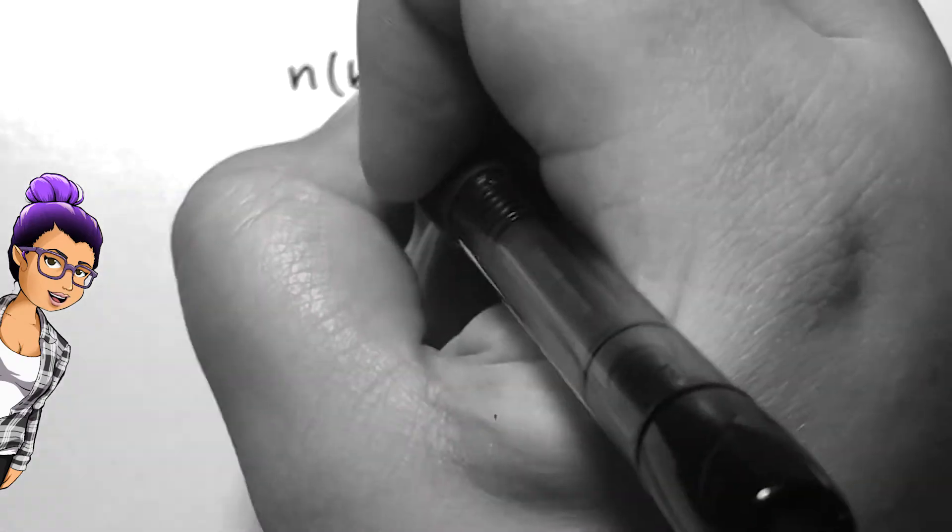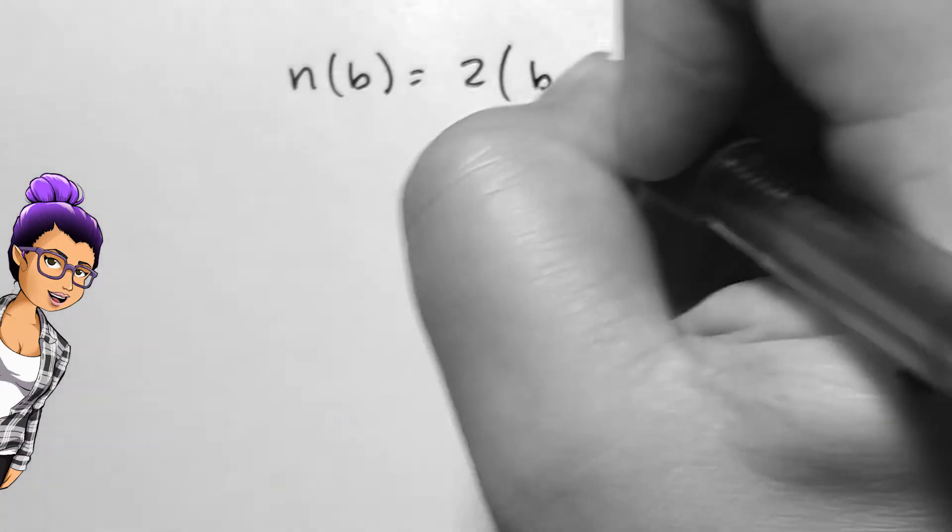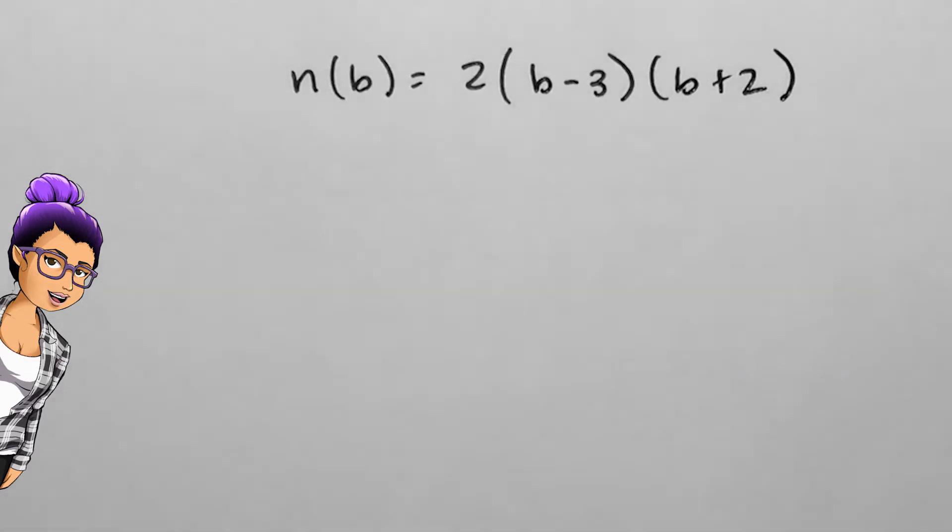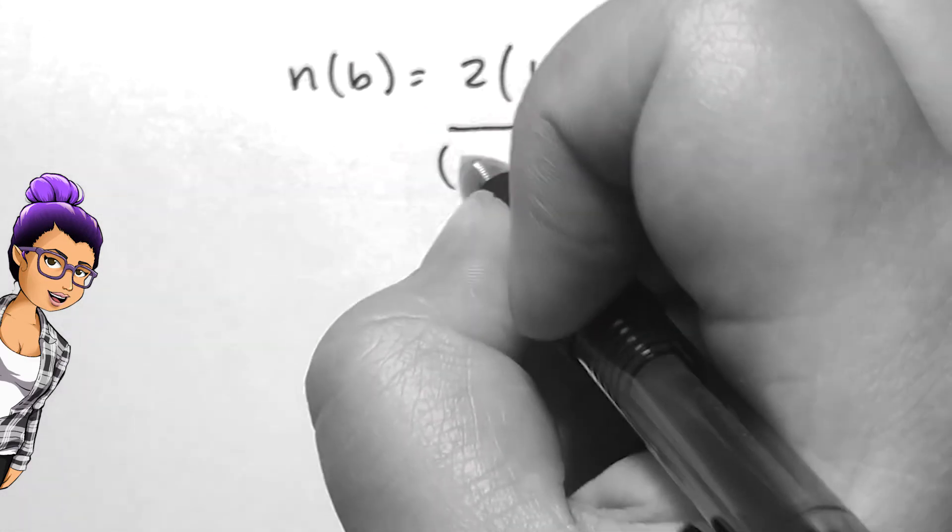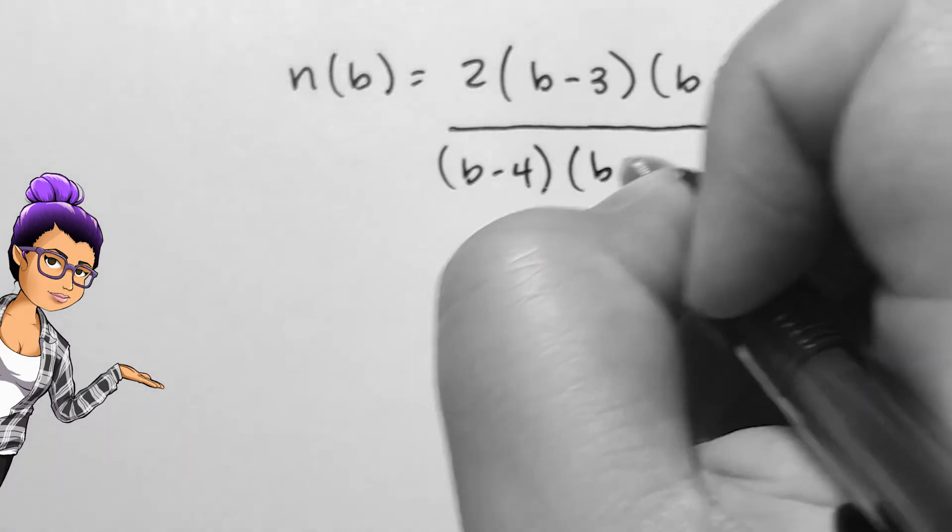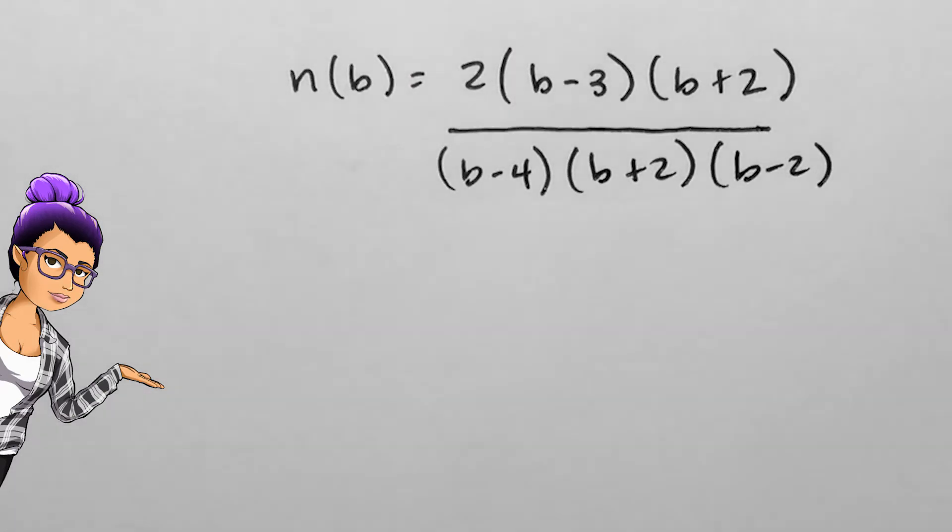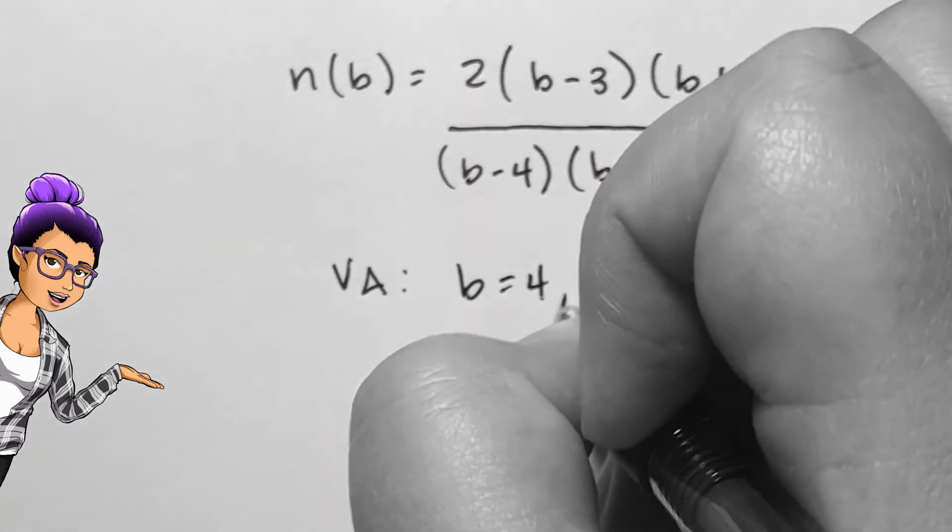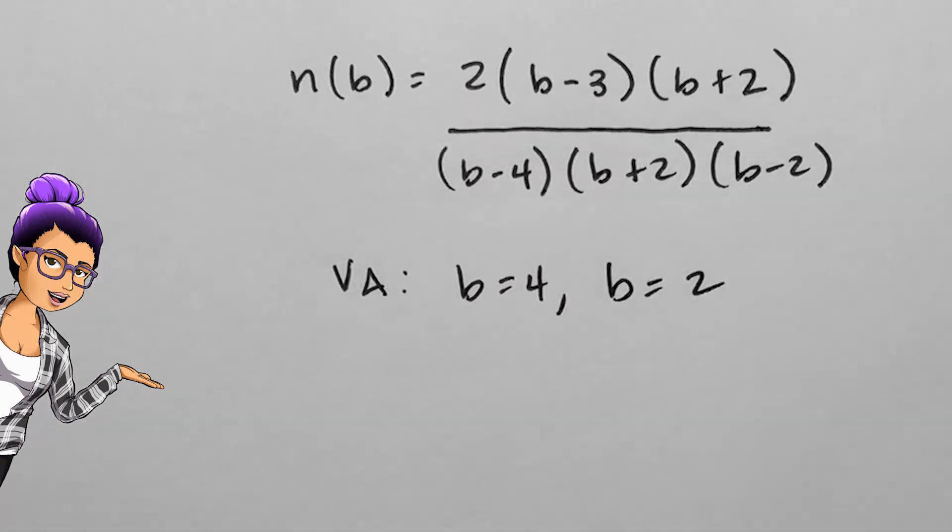If n of b is 2 times b minus 3 times b plus 2 divided by b minus 4 times b plus 2 times b minus 2, there are vertical asymptotes at b equals 4 and b equals 2, but a removable discontinuity at b equals negative 2, so there will be a hole in the graph there.